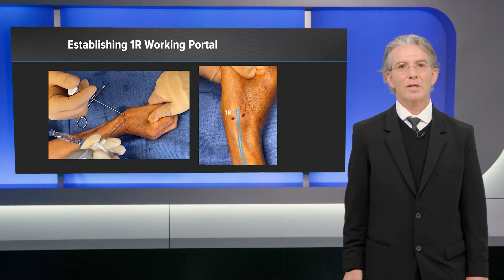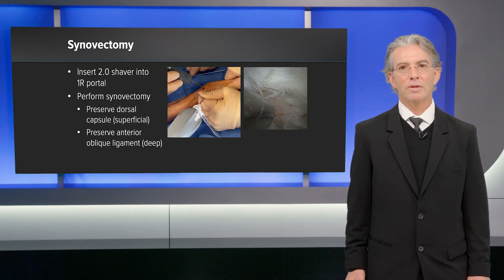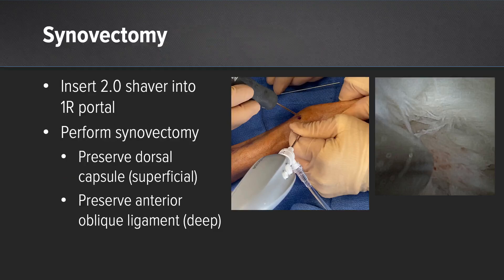Establishing the 1R portal: again, with gentle traction, use a blunt trochar to enter the 1R portal. This can then be visualized, and then place the shaver through the same portal.